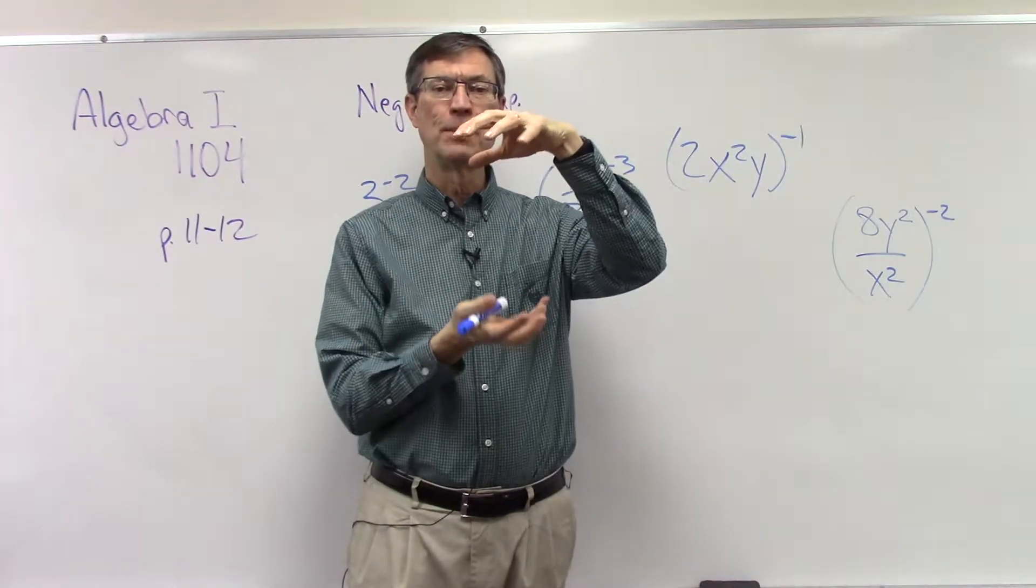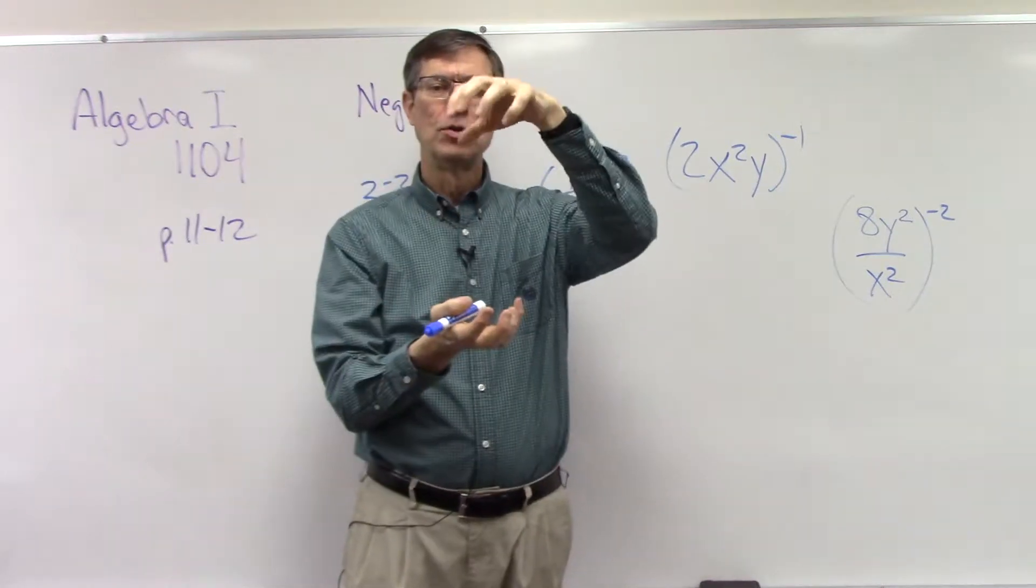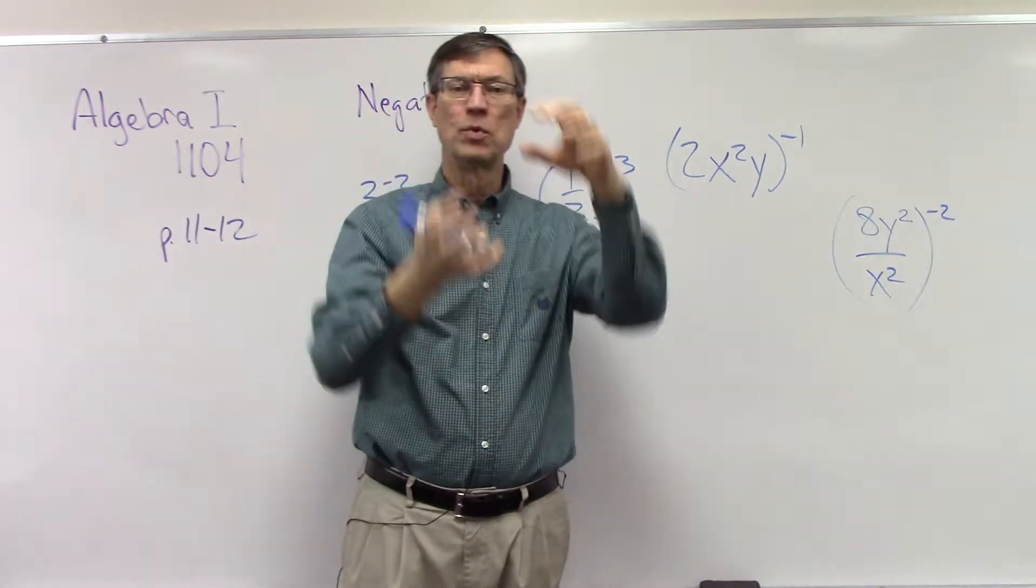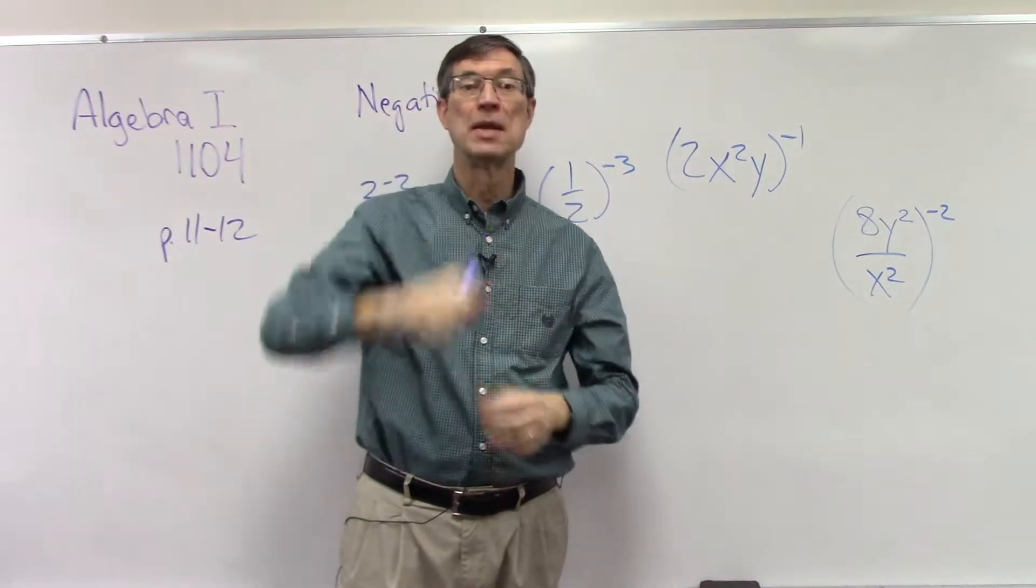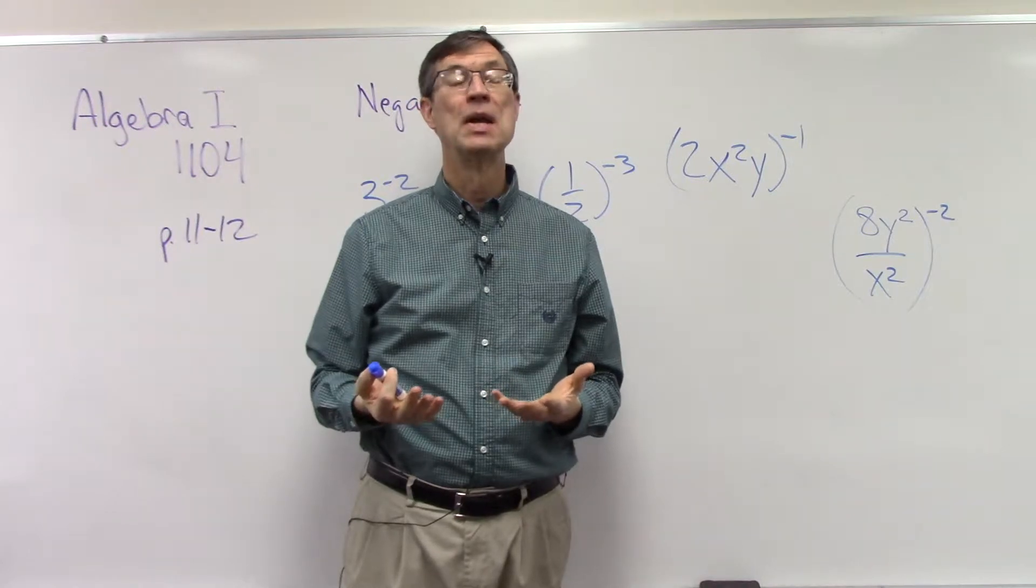We call it the reciprocal - the denominator becomes the numerator and the numerator becomes the denominator. We flip it to the other side. All that does is get rid of the negative part of the exponent, and then you still have to apply the number to whatever's left.